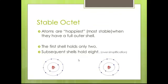A stable octet. Atoms are their happiest, or most stable, when they have full outer shells. The first shell holds two electrons. You can see here, the first shell can hold a maximum of two.